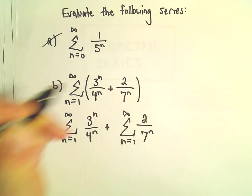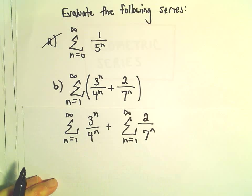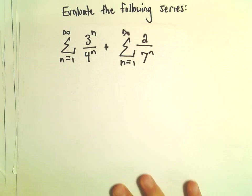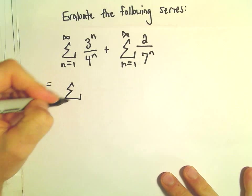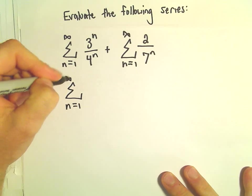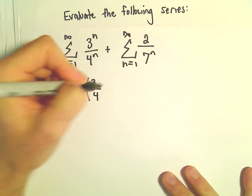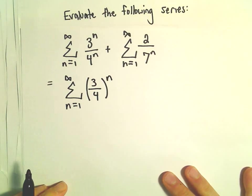And now when we break them up, we are going to have two separate geometric series. So I'm going to rewrite the first one. We can rewrite this as 3 over 4 all raised to the n power.